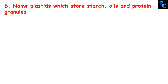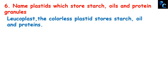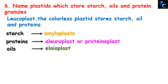Question 6: name the plastid which stores starch, oil, and protein granules. The answer is leucoplast — the colorless plastid that stores starch, oil, and protein granules. When starch is stored it is called amyloplast. When protein is stored it is called aleuroplast or proteinoplast. When oil is stored it is called elaioplast.